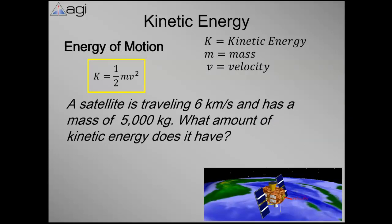Well, here's the equation for kinetic energy, which looks exactly the same as it does in what we learned in physics, which is kind of nice to see something familiar. I don't think there's really any explanation required here. M is mass, V is velocity. And let's go through an example. So a satellite is traveling at 6 kilometers per second with a mass of 5,000 kilograms. What kinetic energy does it have? It's 9 times 10 to the 10th joules.